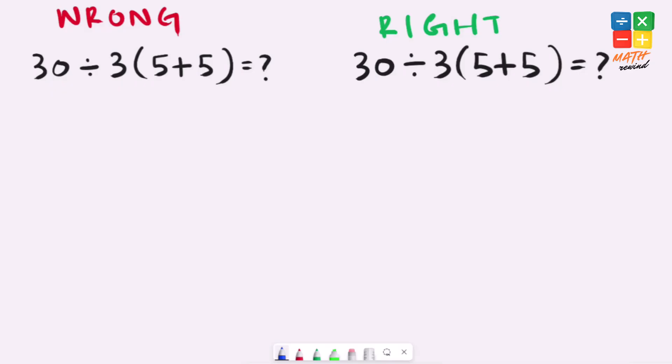So here in this equation we solve 5 plus 5 which equals 10. Our equation simplifies to 30 divided by 3 times 10. 3 times 10 equals 30 and the equation simplifies further to 30 divided by 30 which equals 1. But this answer is not correct.